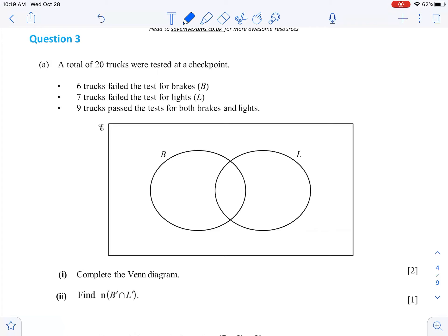So if we're saying this is failed brakes and this is failed lights, we're gonna have 6 trucks in here and here. So this has to add up to 6, this section and this section. This section and this section has to add up to 7. Then it says 9 trucks passed the test for both, so we've got 9 out here.